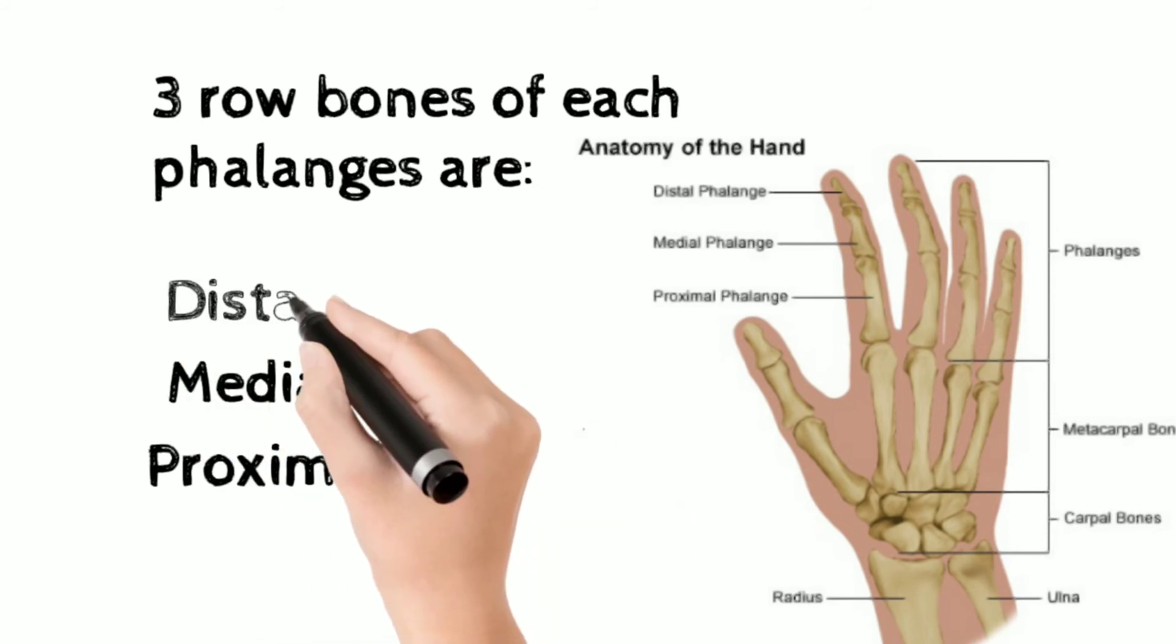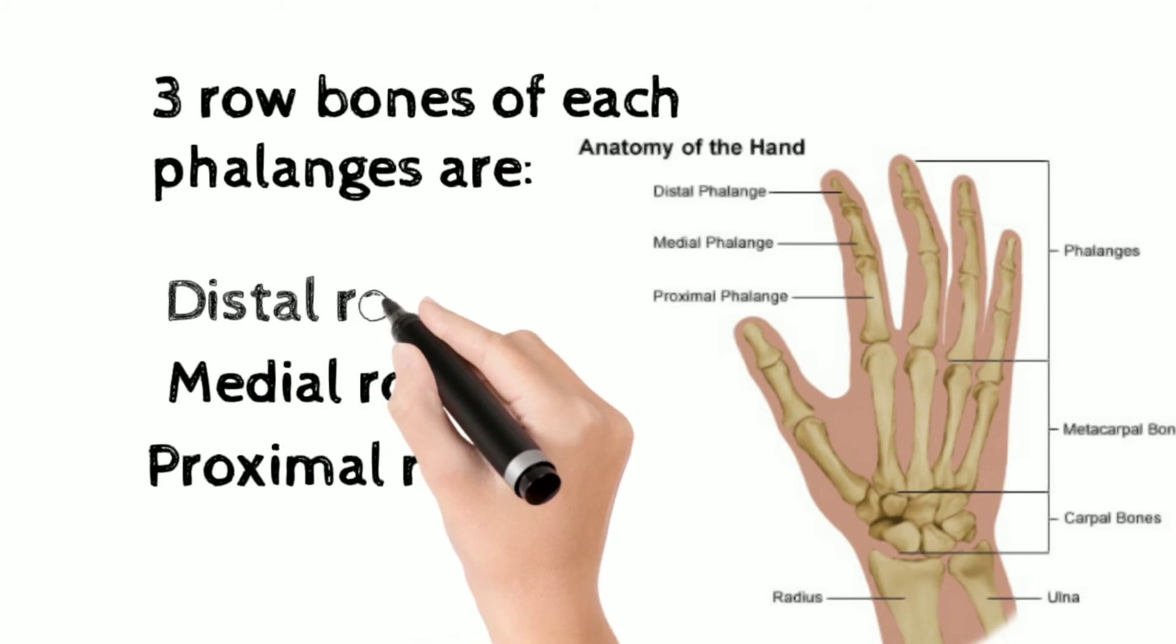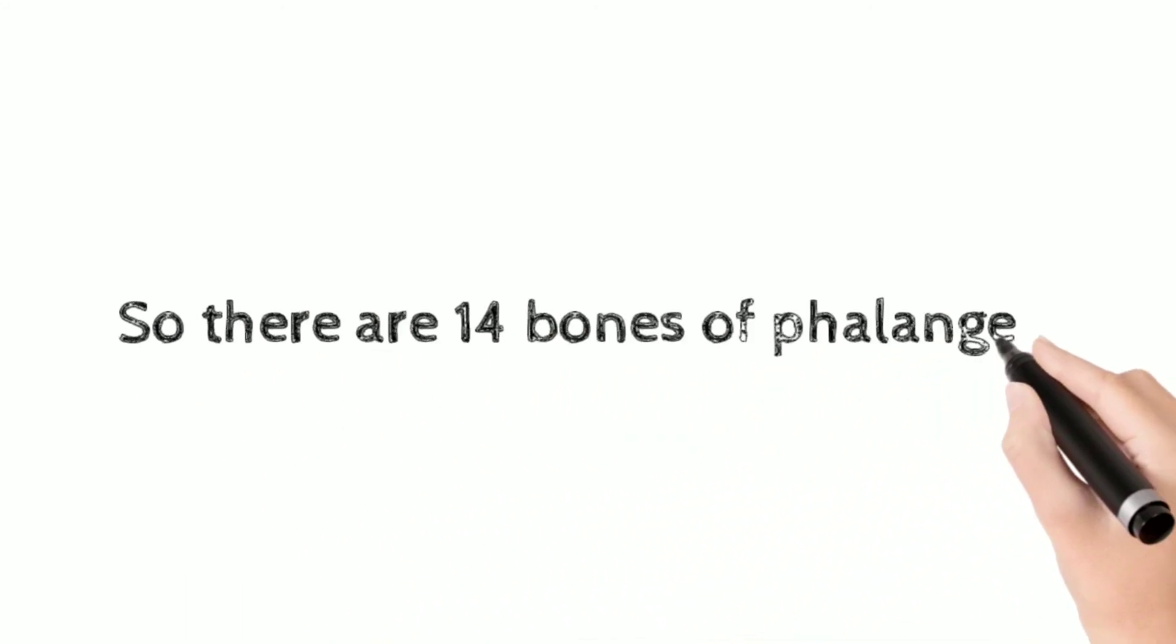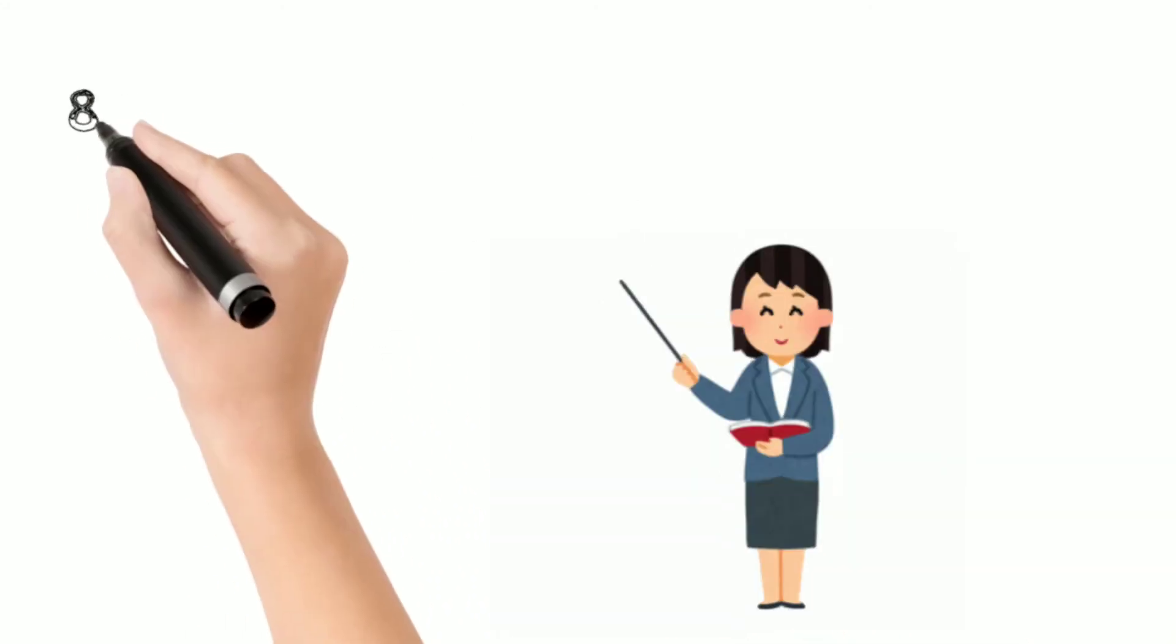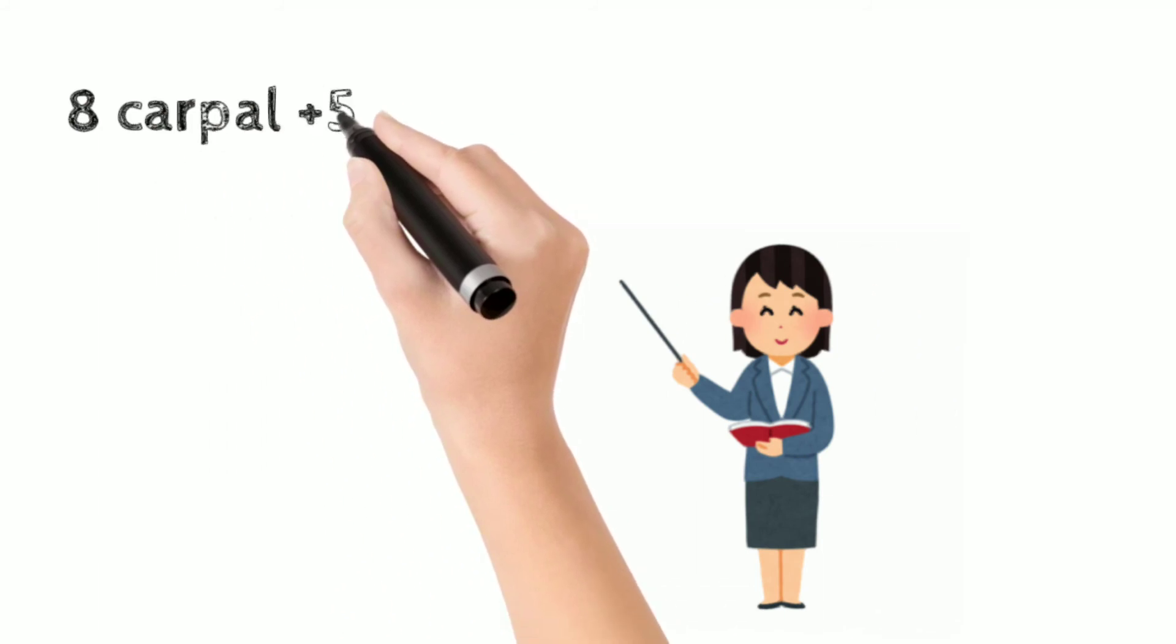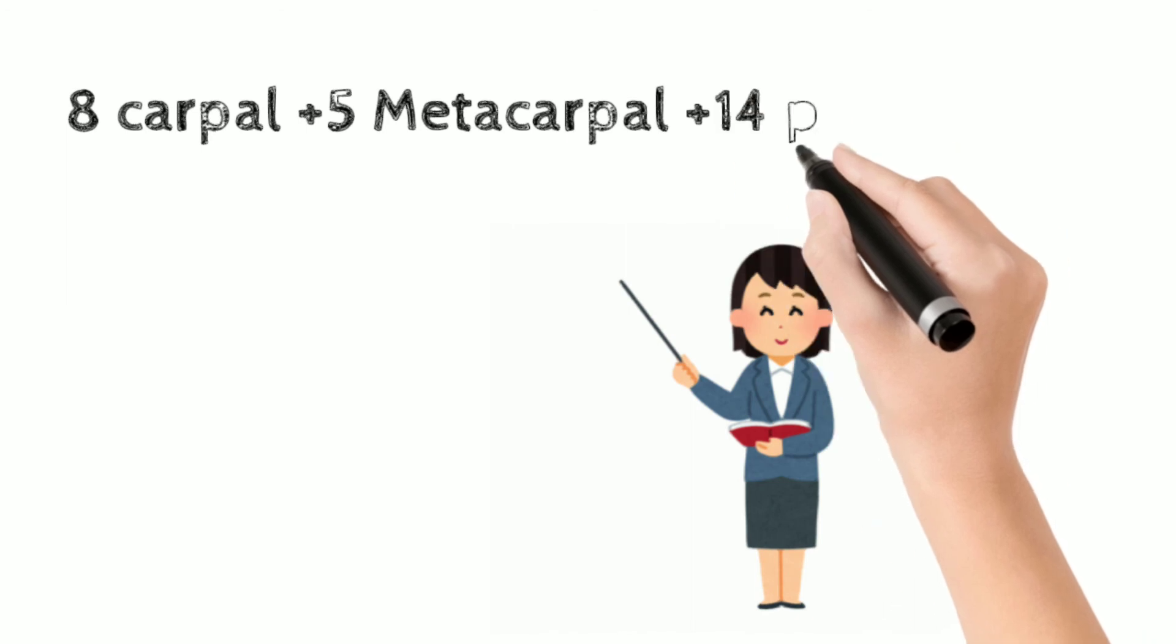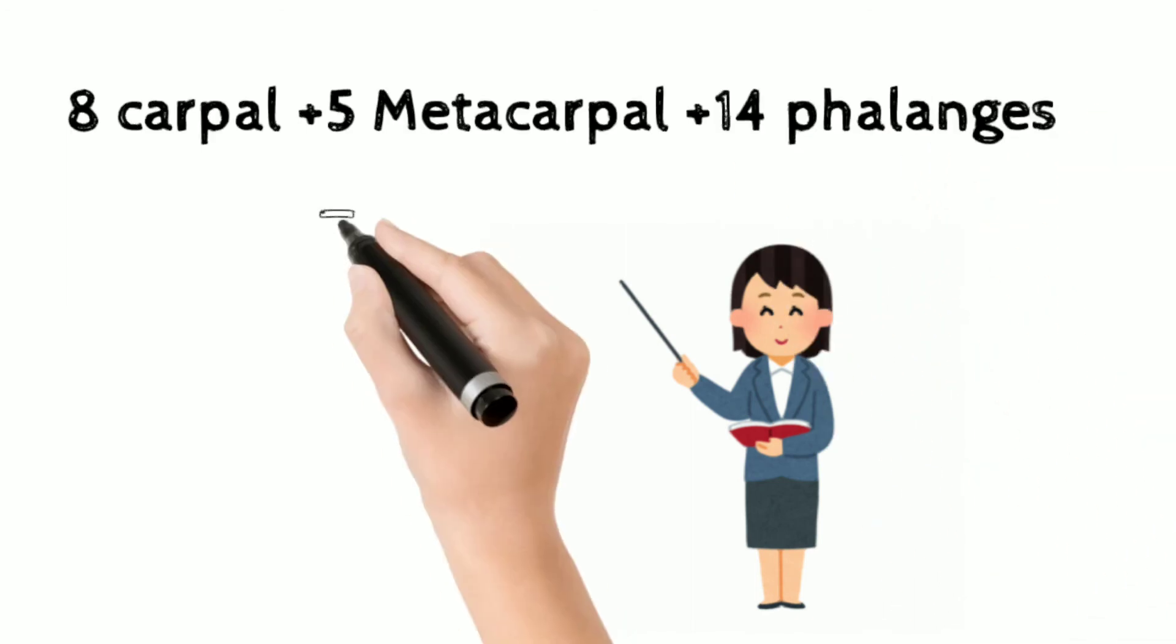So let's calculate the overall hand bones. Eight carpal bones, five metacarpal bones, and 14 phalanges are approximately about 27 bones.